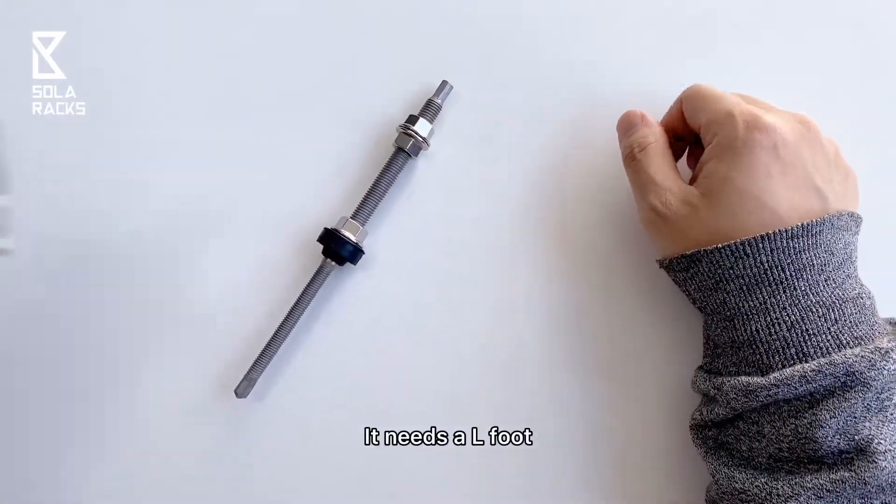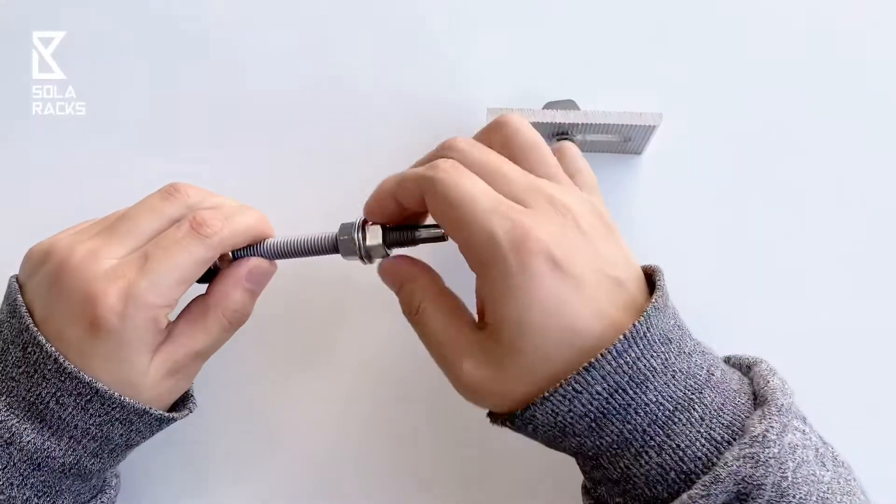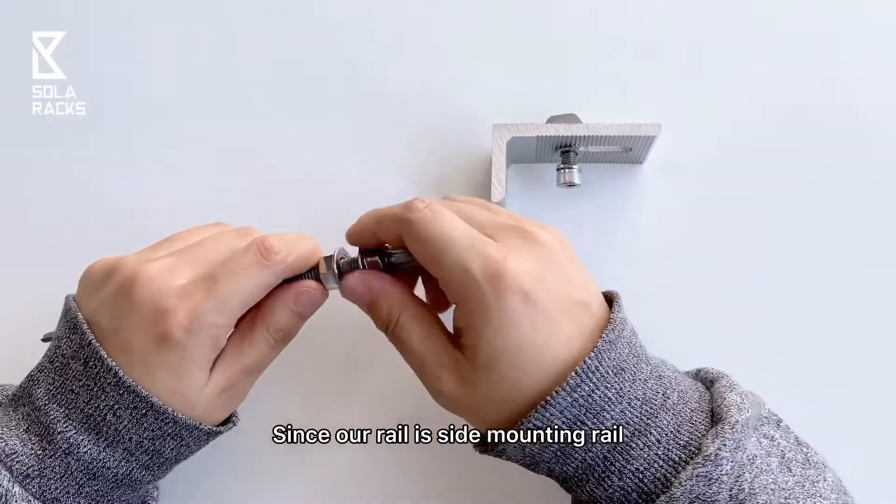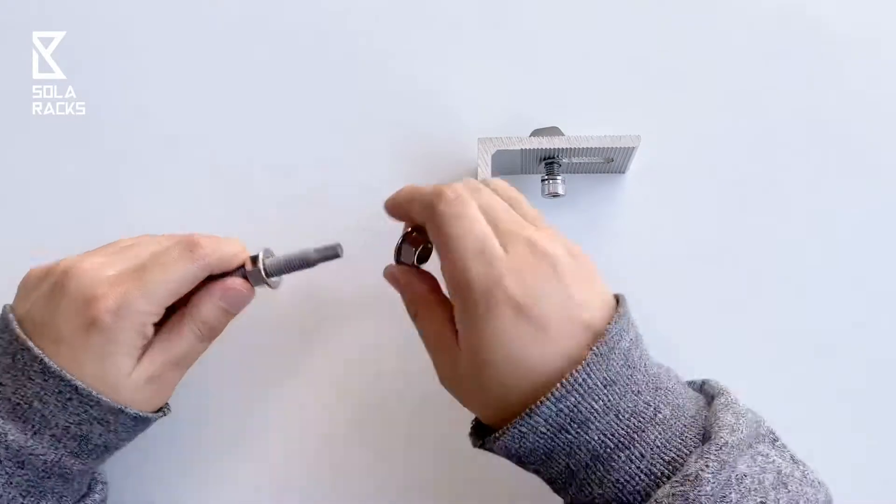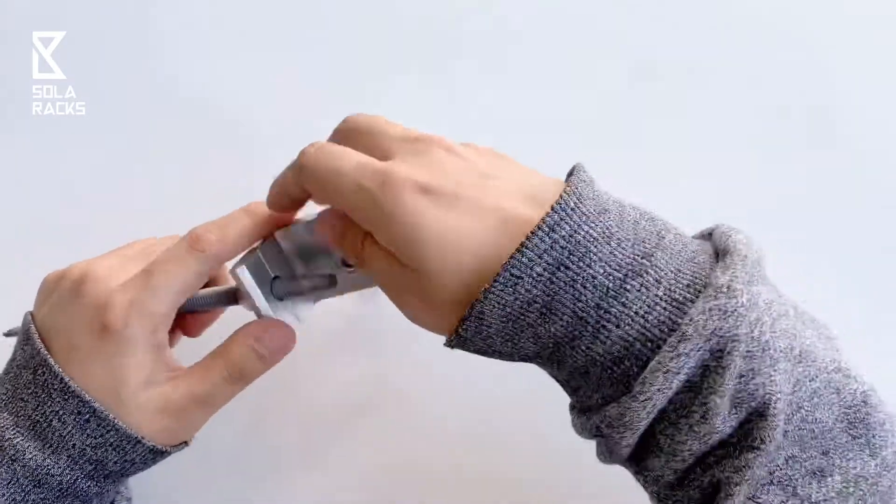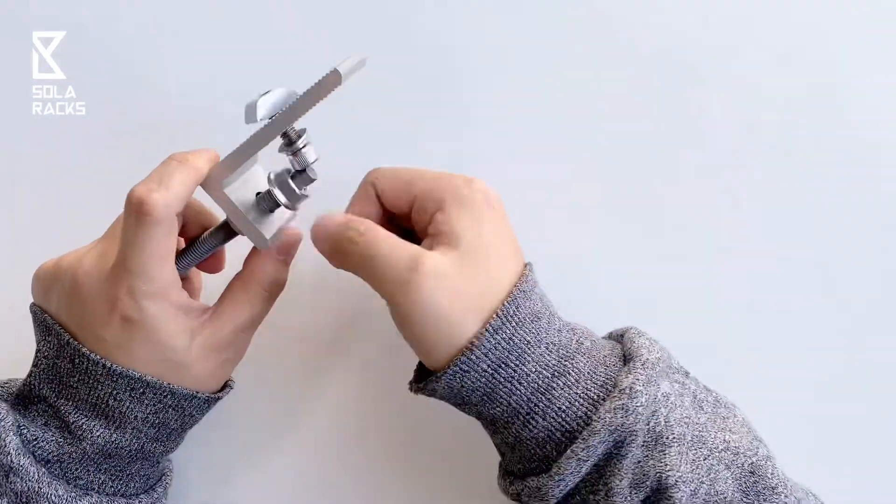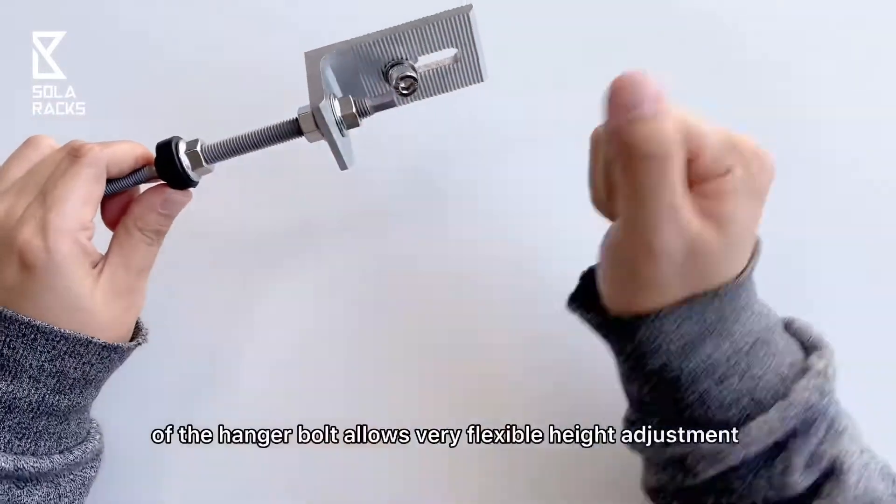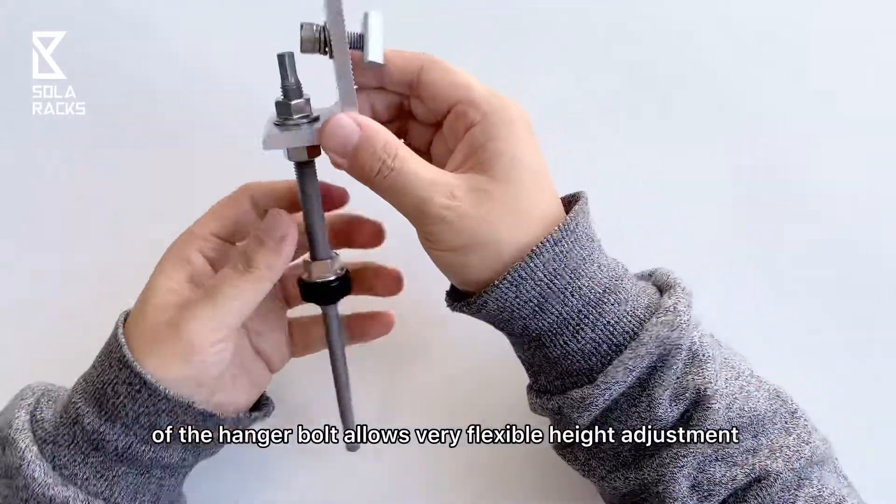It needs an L-foot to join with our rail, since our rail is side mounting rail. The extra length of the hanger bolt allows very flexible height adjustment.